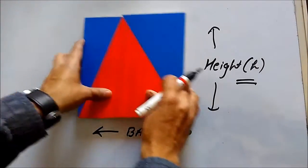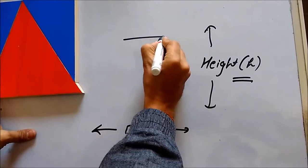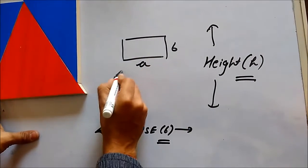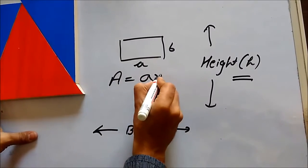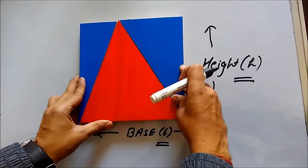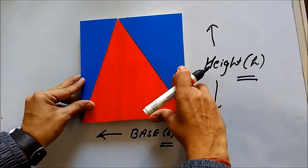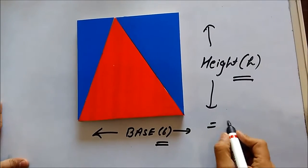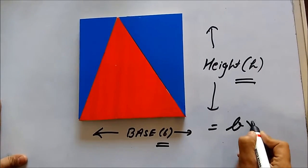From the beginning, we know the area of any rectangle with dimensions A and B is equal to A multiplied by B. When we apply the same formula to this rectangle, the area of this whole figure is equal to B into H.